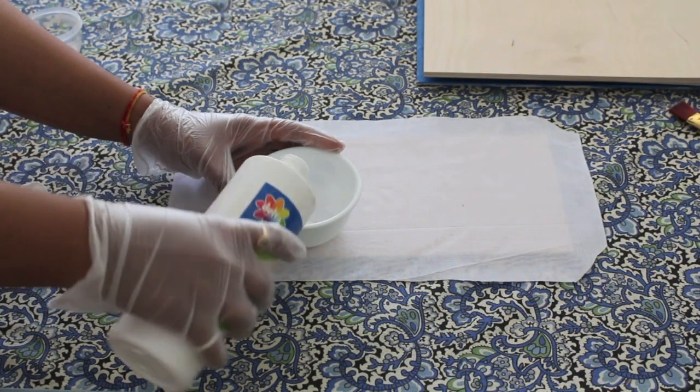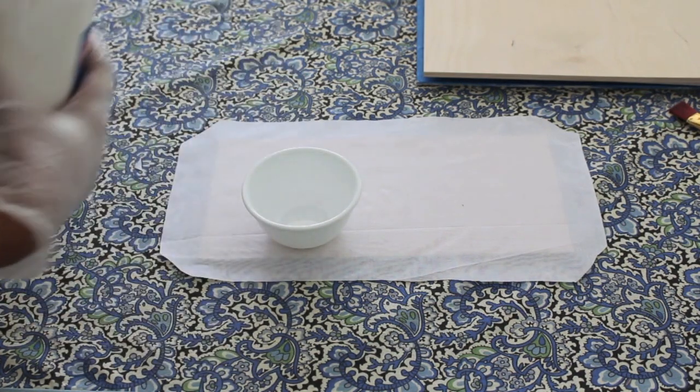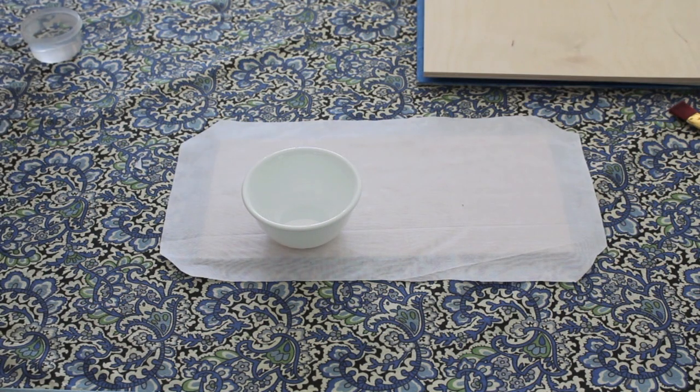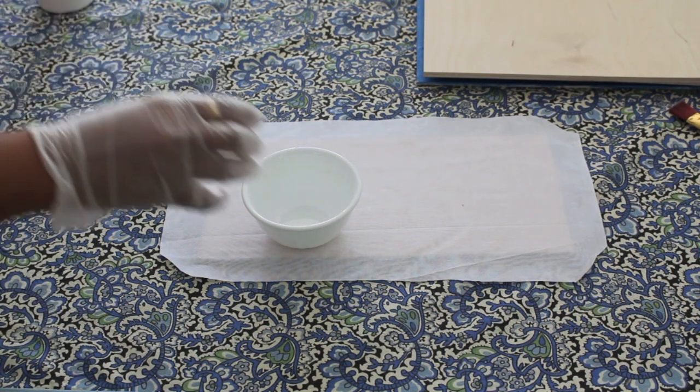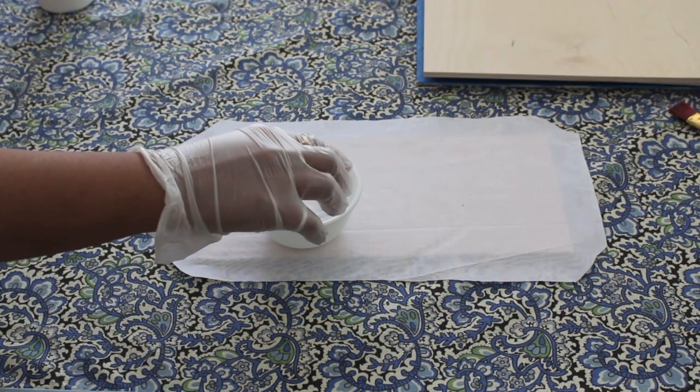Mix a tablespoon of glue with an eighth cup of water and mix till you get a milk-like color and consistency. Mix really well so that you don't have any kind of lumps from the glue.